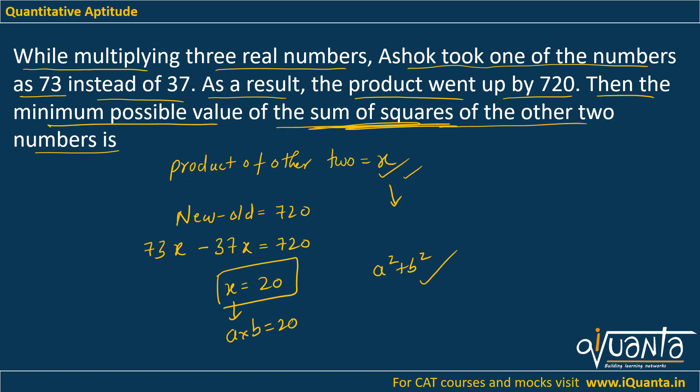We have come across this situation so many times: when we have sum of squares and need to minimize the sum of squares, what I do is always take the numbers as close as possible. So we will be taking a equal to b. If a equals b, both will be equal to √20. Let us check if this is true.